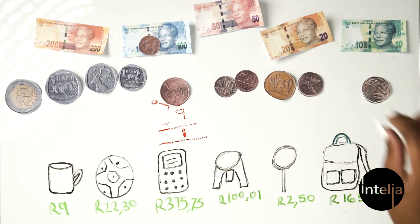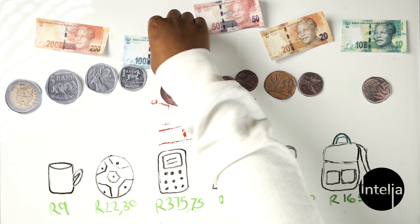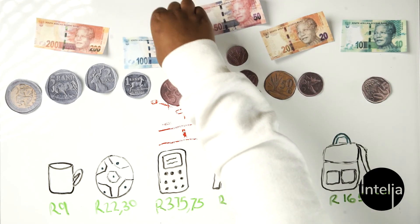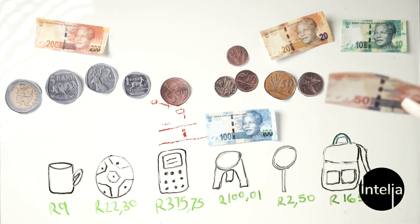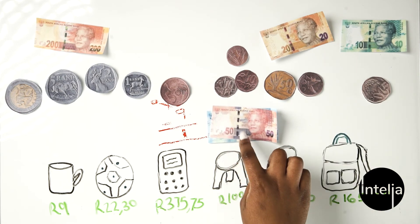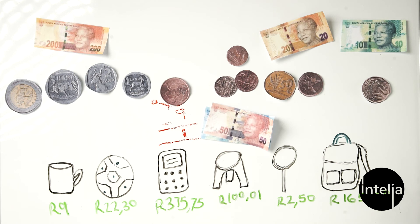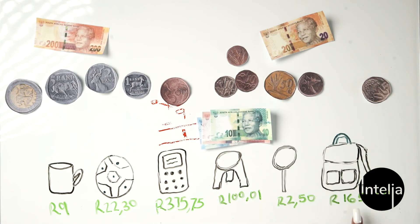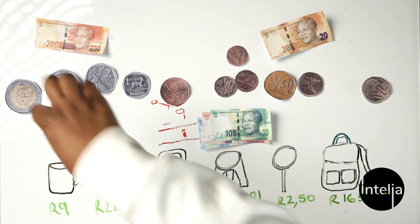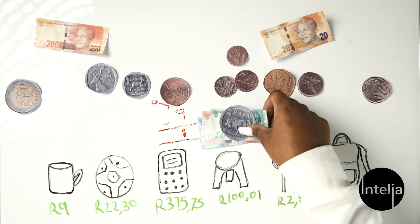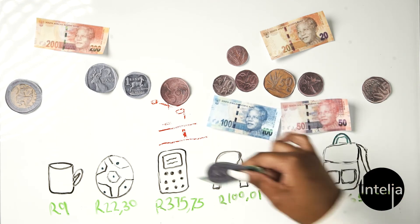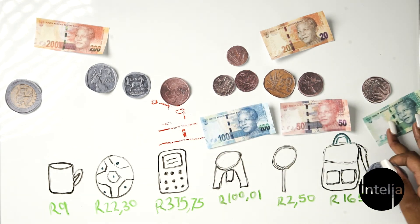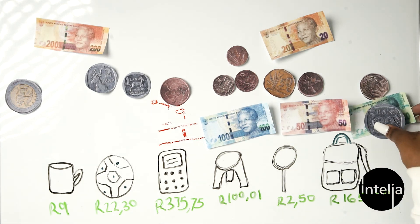For the final example, you have a backpack running for 165 rand. You give 100 rand and 50 rand — that makes 150. Then you add 10 rand to make 160, but you need 5 rand more. So you look for your 5 rand and add it: 100 plus 50 is 150, plus 10 is 160, plus 5 is 165.